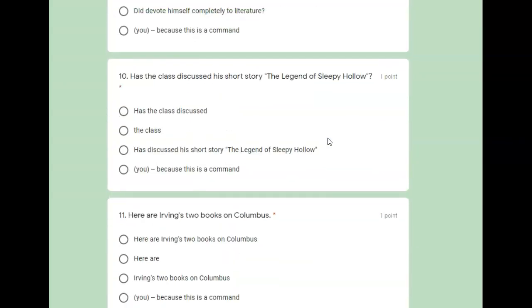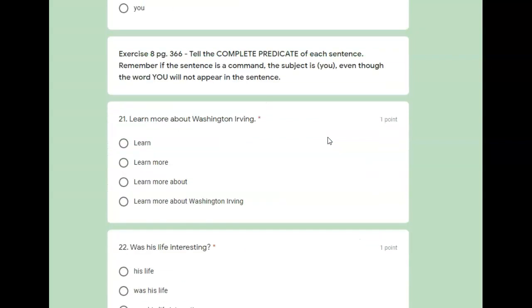We're going to move down to exercise eight, where it deals with complete predicates. So we figured out at first who or what the sentence is about. Now we're figuring out what they did. So again, if the sentence is a command, that subject is going to be you. So keep that in mind. You're not going to have to pick those command sentences out necessarily, but it might affect the predicate. So we're going to do 21, 22, and 24 for exercise eight.